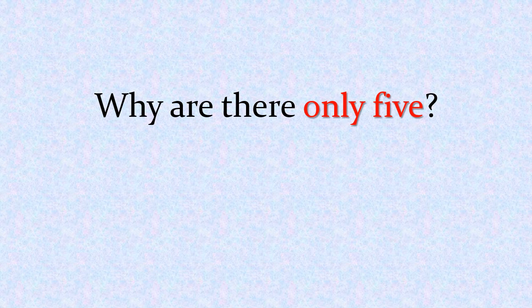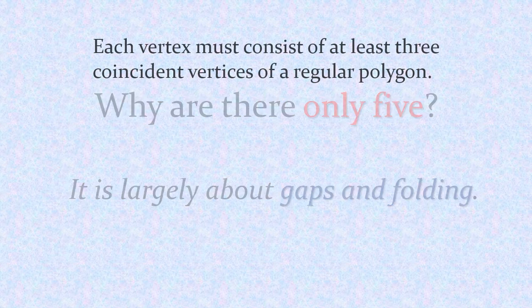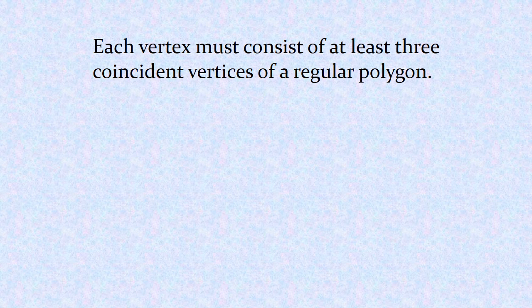So the big question of this presentation is: why are there only five of these things and not more? It largely has to do with the gaps of those patterns when folding them together. One thing we have to say about creating these polyhedron models is that each vertex must consist of at least three coincident vertices of a regular polygon. If there were only two polygons at a vertex, folding them together would not necessarily make a three-dimensional object — in fact, you could fold them flat.